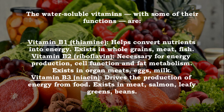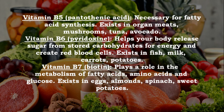The water-soluble vitamins include: Vitamin B1 (thiamine) — helps convert nutrients into energy; found in whole grains, meat, and fish. Vitamin B2 (riboflavin) — necessary for energy production, cell function, and fat metabolism; found in organ meats, eggs, and milk. Vitamin B3 (niacin) — drives the production of energy from food; found in meat, salmon, leafy greens, and beans.